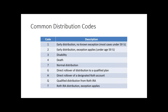Code 2 is also an early distribution, but typically there's an exception that the third-party administrator is already aware of. We typically see these in cases where a client is getting a retirement distribution due to a divorce situation and they're under 59½ — that's actually an exception to the 10% penalty. The third-party administrator already knows that, so they'll put code 2 in, and your TaxLayer program won't apply a penalty. So you don't actually have to fill out any Form 5329 — it's going to take care of that automatically.